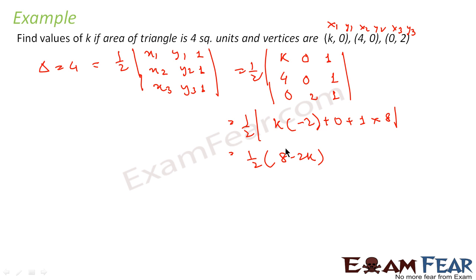Now I am told that area is 4. So that means 1 by 2 times 8 minus 2K can be plus or minus 4 because the area is 4, this value can come out to be negative also. If it's minus 4, in that case also area is 4 because we take absolute value. If it comes out to be 4 then also we take 4 as the value. So in that case 8 minus 2K is plus or minus 8. So two options: 8 minus 2K equals 8 or 8 minus 2K equals minus 8.